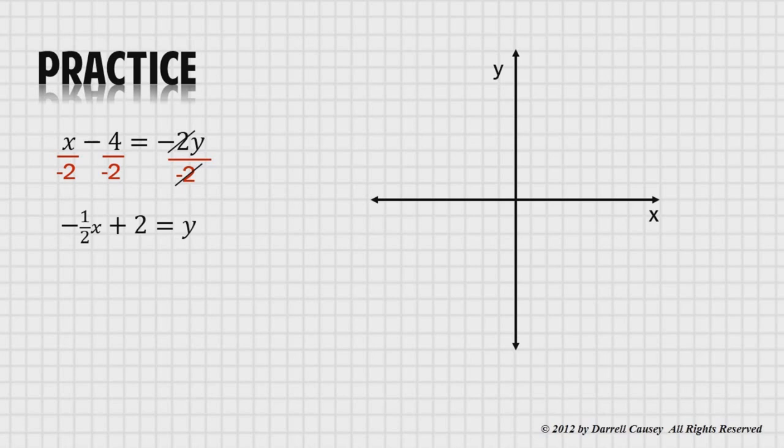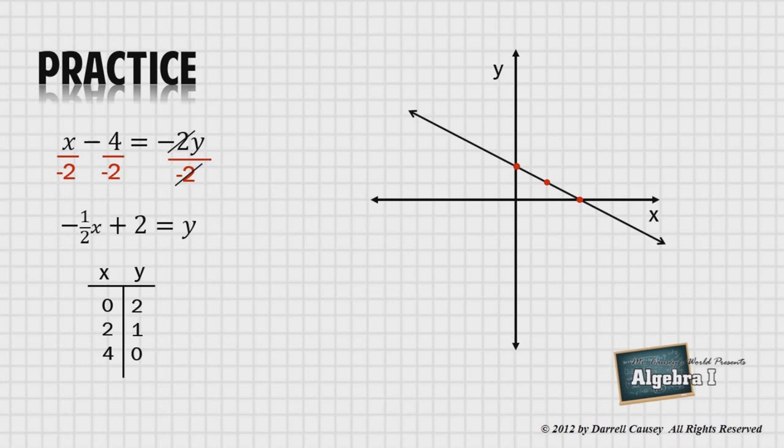Draw your t-table and choose three points. Plot these three points and draw a line through them. Voila, you graph the line for the equation.